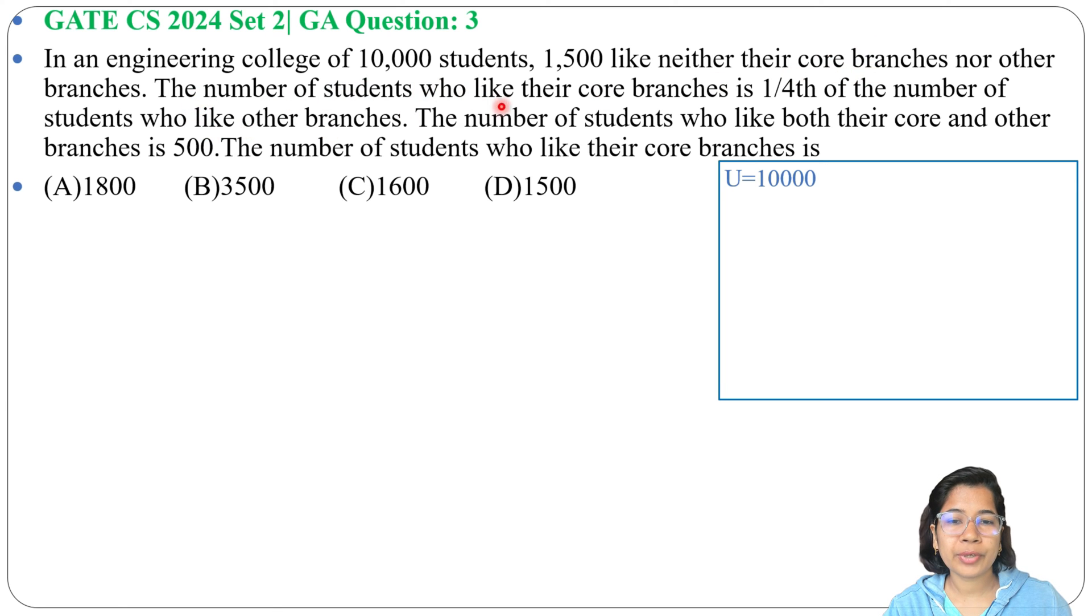The number of students who like their core branches is 1/4th of the number of students who like other branches. If you take two sets, one is C who likes core branches and another is O who likes other branches, then the number of students who likes core branches is 1/4th of the number of students who likes other branches.